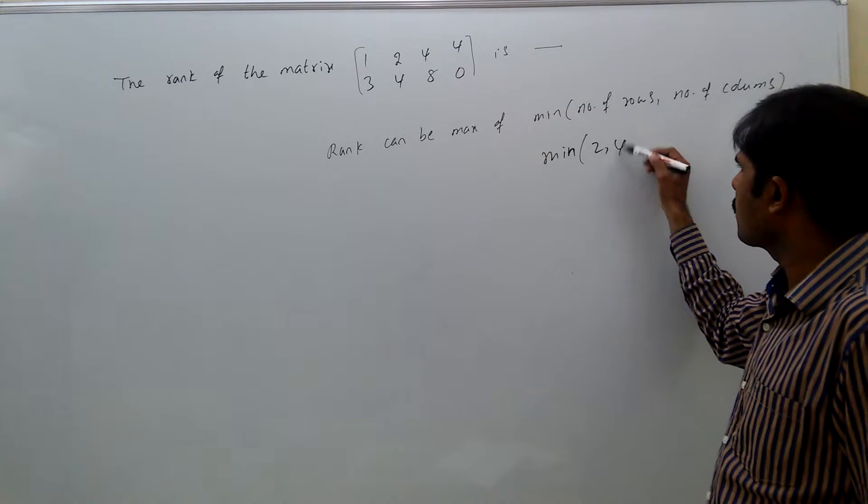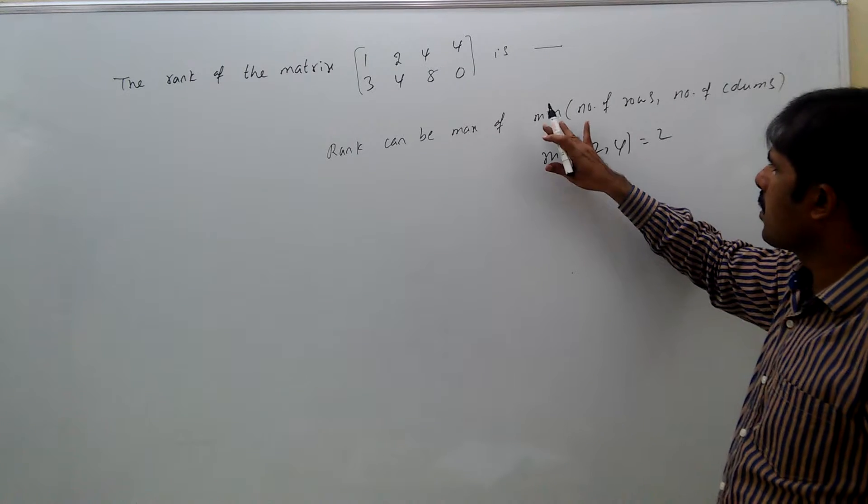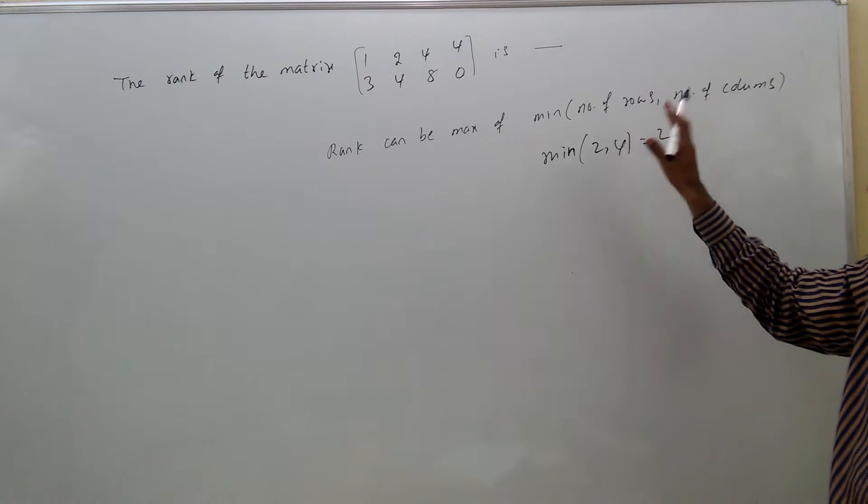Number of rows is 2, number of columns is 4. The minimum of number of rows and number of columns is 2.